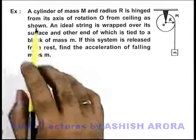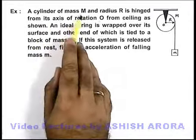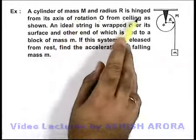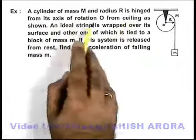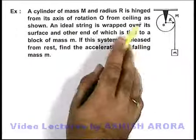In this example, we are given a cylinder of mass M and radius R, hinged from its axis of rotation O from the ceiling as shown.